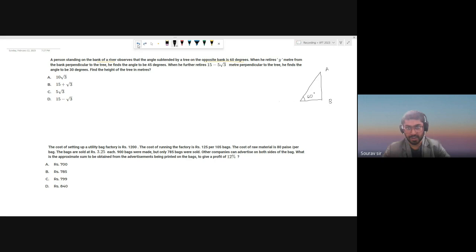Now he moves away y meters, and the new angle is 45 degrees. He further moves 15 minus 5 root 3 meters away. Don't know how we measured 15 minus 5 root 3 but apparently he did. So this distance and that angle, the new angle is 30 degrees.